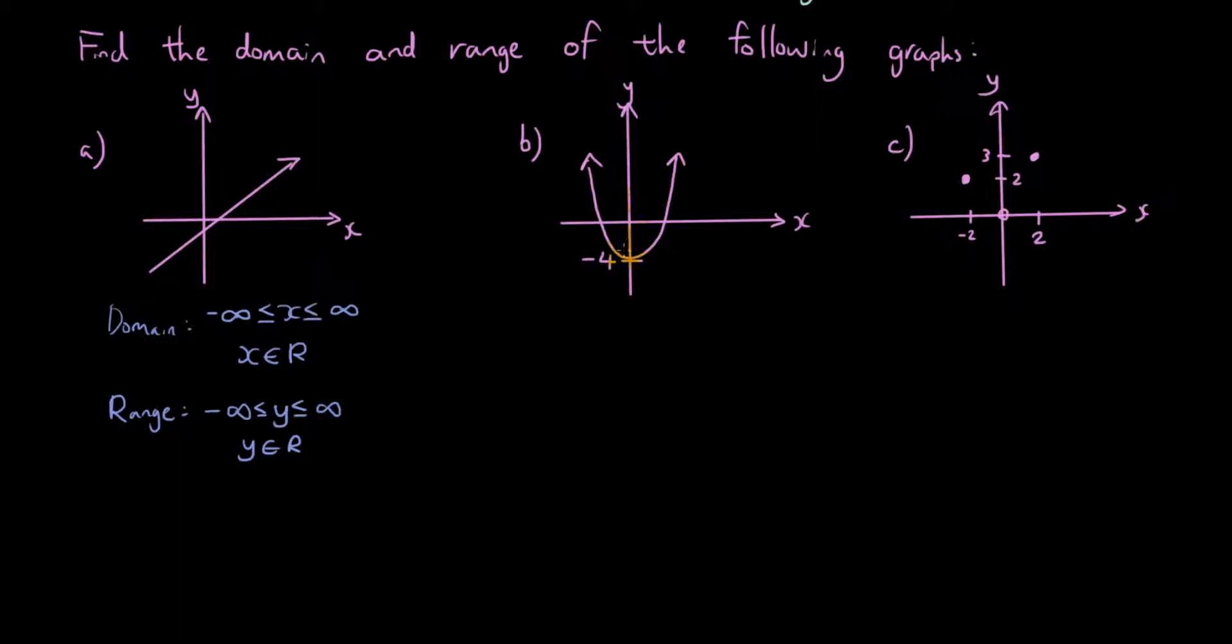Now let's go to question b. The domain. If you have a look at the graph horizontally, it is covering all the possible numbers. Because if you imagine this line and you extend it as far as you want, what's going to happen is the line will get wider and wider, and eventually it will cover all the possible x values. So the domain is still negative infinity to positive infinity.